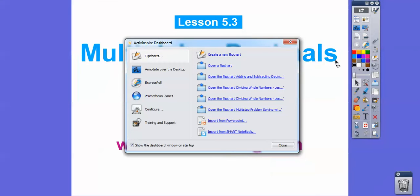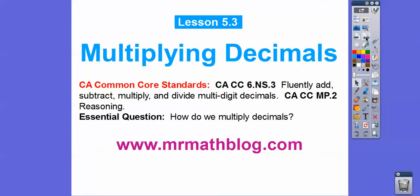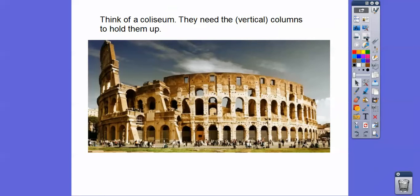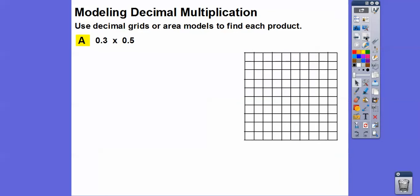Okay, let's get going. Here's our common core strand for our teachers, and our question basically is: how do we multiply decimals? Quick review — I always forget what's a row versus a column. Rows go horizontal, and columns go vertical. A student once told me: think of a coliseum. Coliseums have columns going up and down that hold them, so that's how I know the difference.